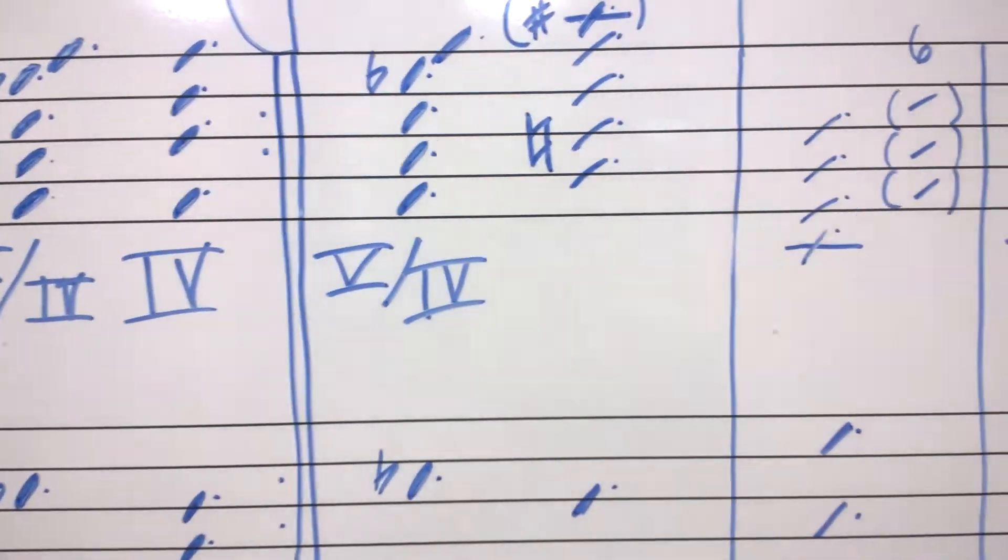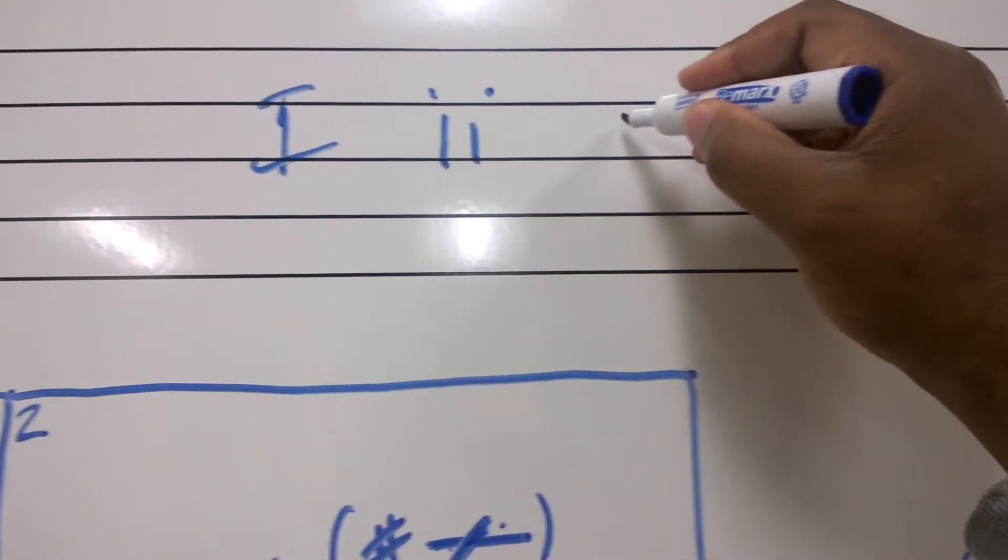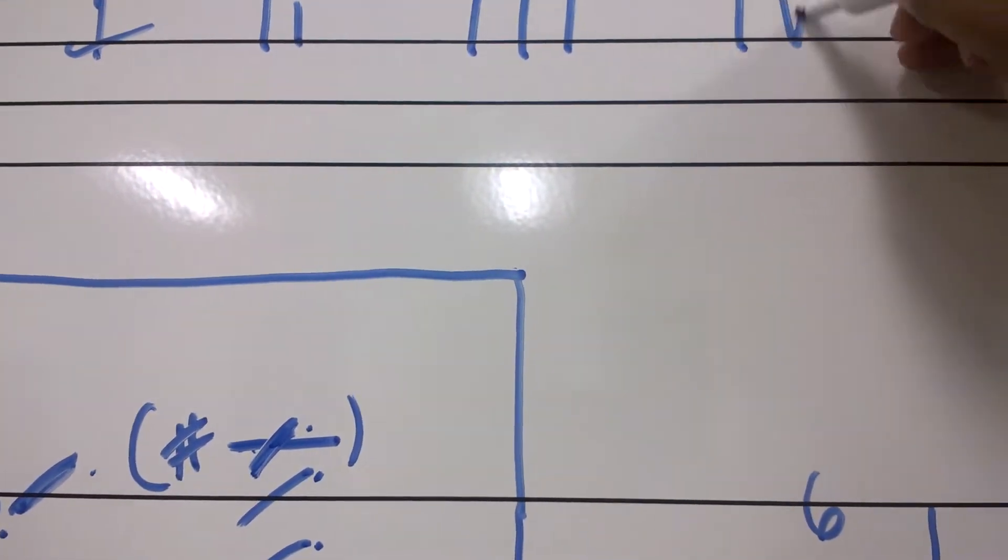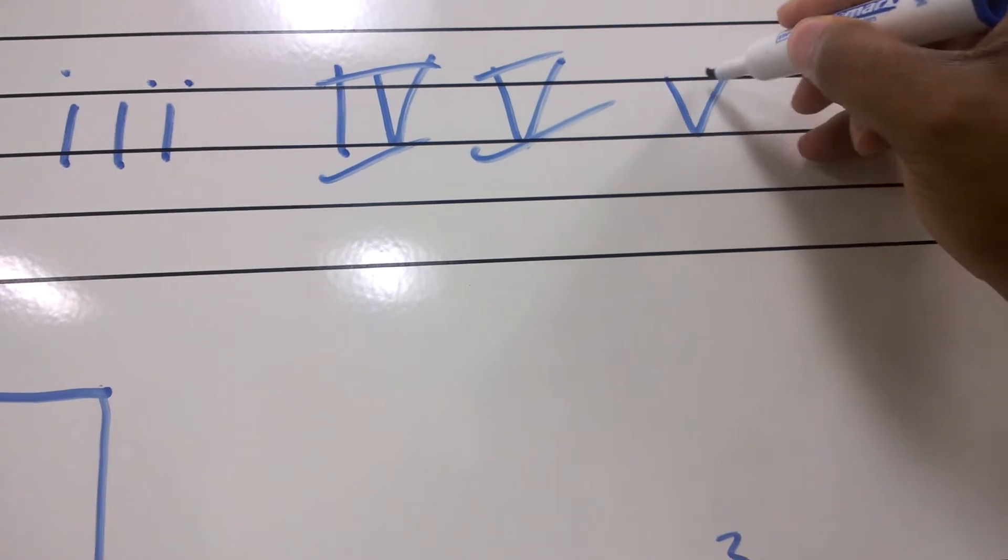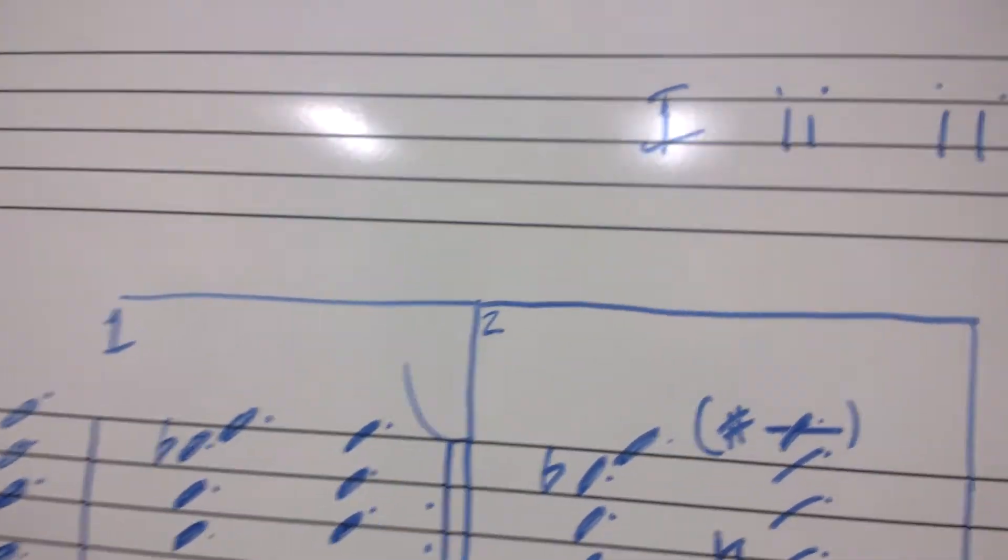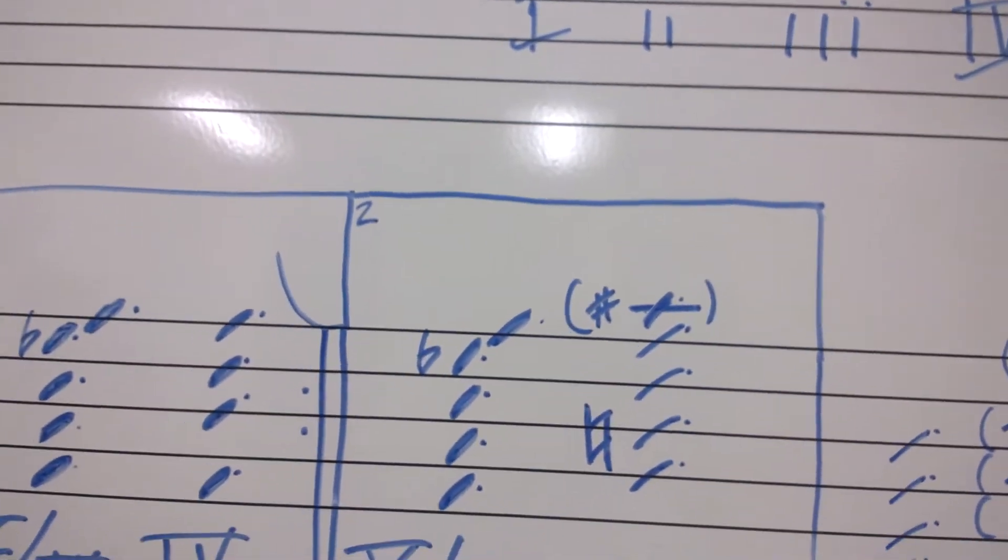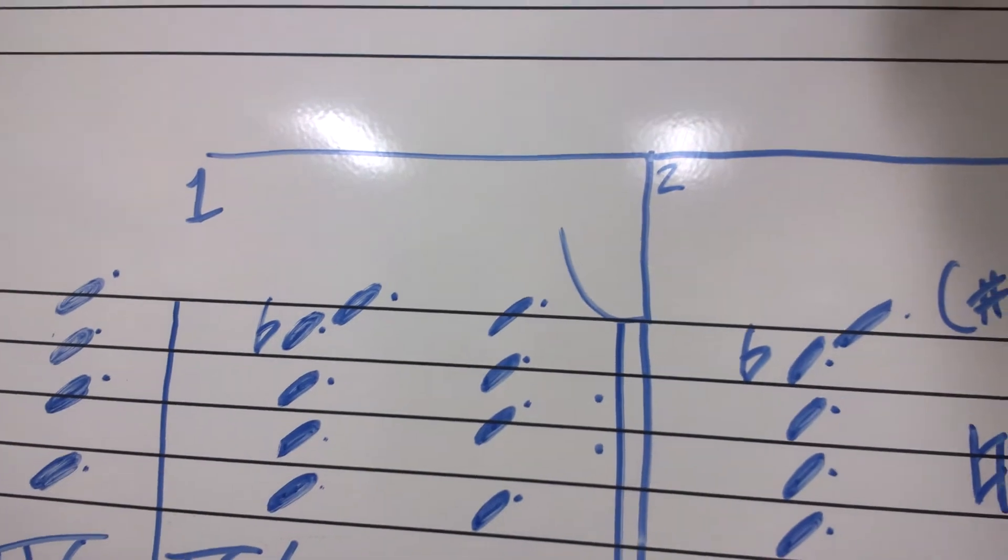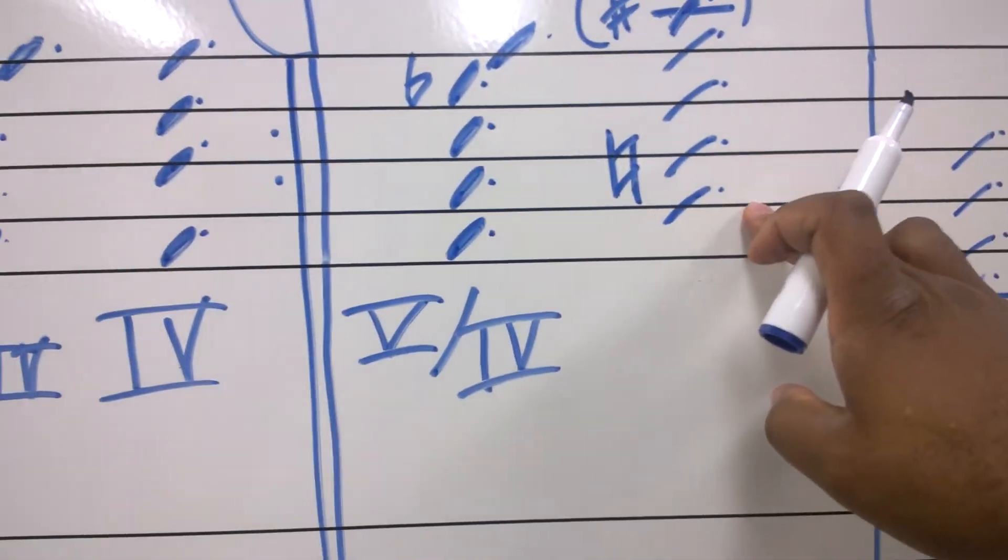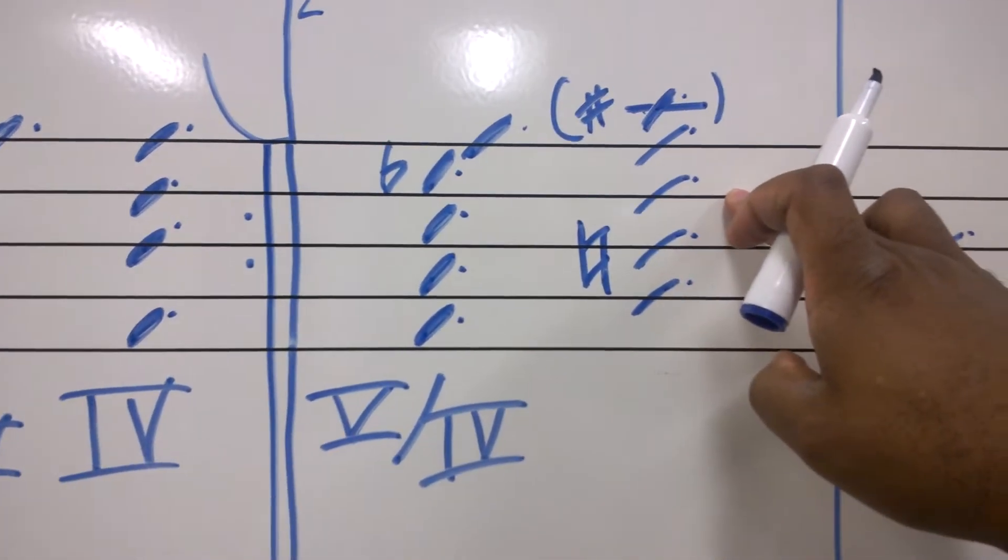But here you have something different. Now, in normal theory, you would have tonic, supertonic, median, subdominant, dominant, submediant, and your leading tone. Now, if this were in the key of F, you would have F, A, C, A being the third, F, A, C, right there. Okay, so far, so good. This is built on the second scale degree. So, that would be G, B flat, D, but there's a B natural.